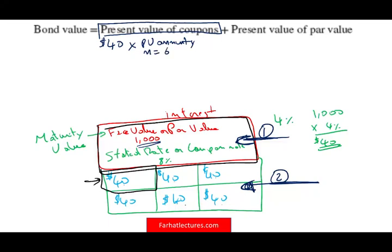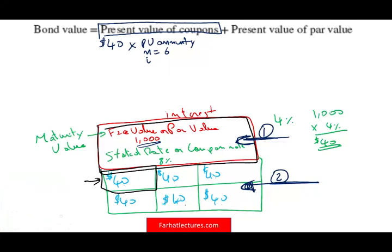The period equals six — you're getting six payments. The question is: which interest rate do you use for this annuity? When you discount, you have to use what's called the market rate, or the yield — also called the required rate of return. So when an investor is trying to buy a bond, they will use the market rate to find the present value of the coupon payments. They don't use the stated rate, unless the market rate happens to also be 8%. For the sake of illustration, I'm going to assume the market rate is 8% and the coupon rate is 8%, but the market rate doesn't have to equal the coupon rate and oftentimes it's not.